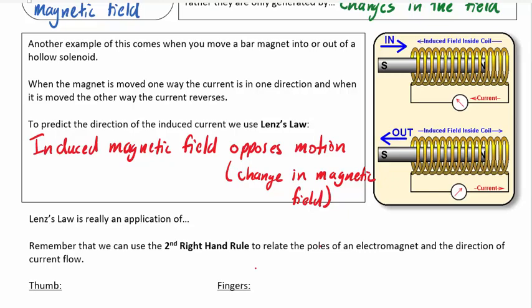And by motion, we really mean a change in the magnetic field. So if you look at this example on the right, you can see we've got a bar magnet with the north pole here, and we're pushing this bar magnet into the solenoid. So as the north pole of the solenoid moves to the right, there's an induced magnetic field inside the coil that resists that change.